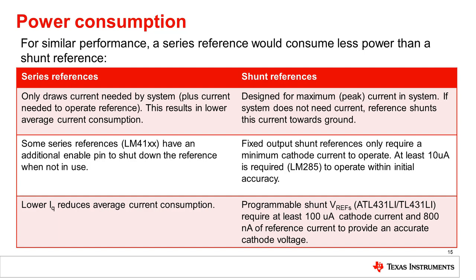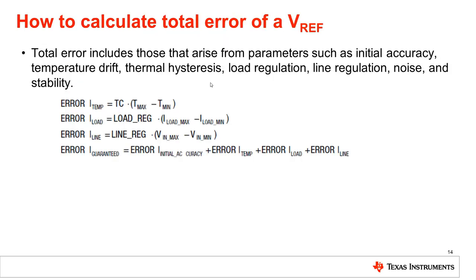Overall, different applications will have different power consumption requirements, so understanding these differences can be critical. Now that we have all the important parameters listed out, we can estimate the total error or accuracy of the voltage reference. When calculating total error, it is helpful to separate specifications where a maximum value is guaranteed — such as temperature coefficient, initial accuracy, load regulation, and line regulation — from those where only a typical value is provided, such as 0.1 Hz to 10 Hz noise, thermohysteresis, and long-term stability.